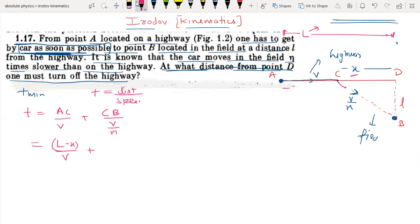Plus CB, we can write by Pythagoras theorem, square root of L square plus X square upon V by N. So this equals L by V minus X by V plus N by V times square root of L square plus X square.